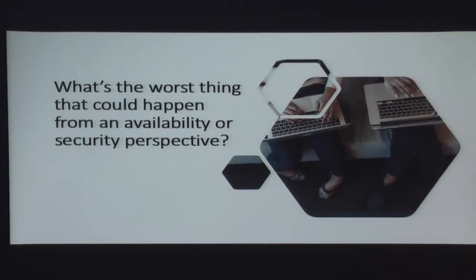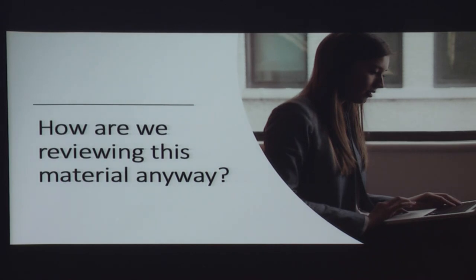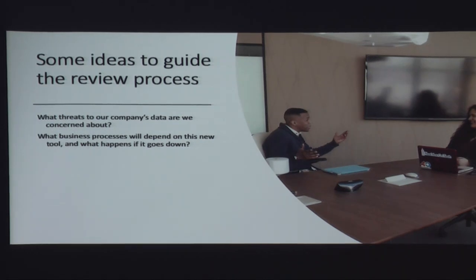So now that we have a data classification, we know this vendor is going to touch sensitive data. One of the things I keep coming back to is: what's the worst possible thing that could happen from a security or availability perspective? That tells me how freaked out I should be and how much rigor I need in this analysis. We should have some form of formal review — a checklist of things like 'do you have an IR plan, do you do access control reviews?' Some ideas to guide this: what threats to company data are we concerned about? Do your own internal red-team exercise and capture those things. What business processes depend on this and what happens if it goes down?